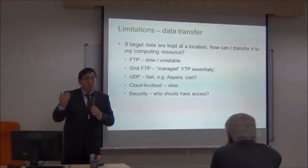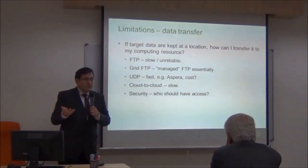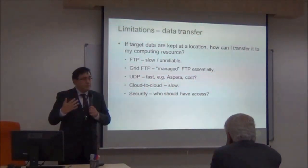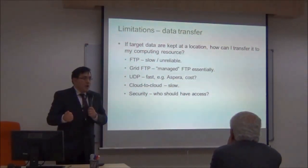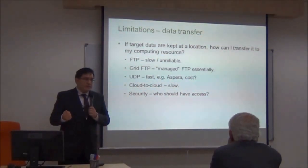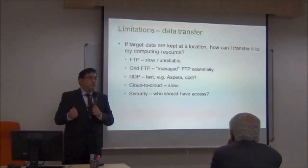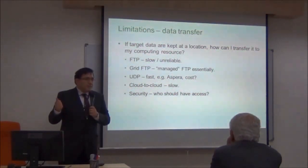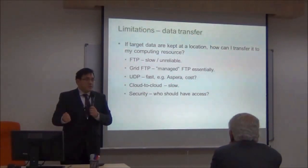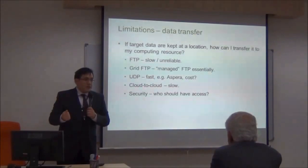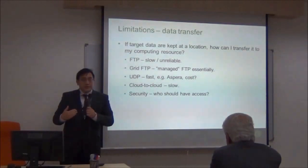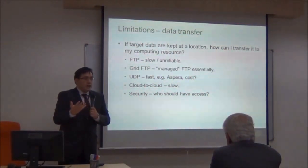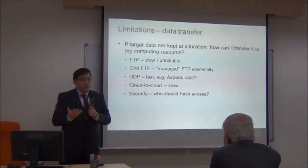Another solution beyond FTP is a UDP-based technology called Aspera. A company has developed this technology, which is free for users. It's used all across the world and has won awards, including Emmys, because it's very popular in the American media industry. Netflix, which accounts for about 50% of all internet traffic in America today, uses Aspera. It's a very important piece of technology that is free for end users, though there is a small licensing cost if you're running a server. At the EBI, we have an Aspera service so people can download from us using Aspera — this is how we try to offer a good service for users who want to download large amounts of data.